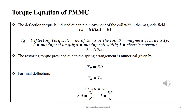The deflection torque is induced due to the movement of the coil within the magnetic field. It is given numerically as TD equals N·B·L·D·I, equal to G·I, where TD is the deflecting torque, N is the number of turns of the coil, B is the magnetic flux density, L is the moving coil length, D is the moving coil width, I is the electric current, and G stands for the product of N, B, L, and D.